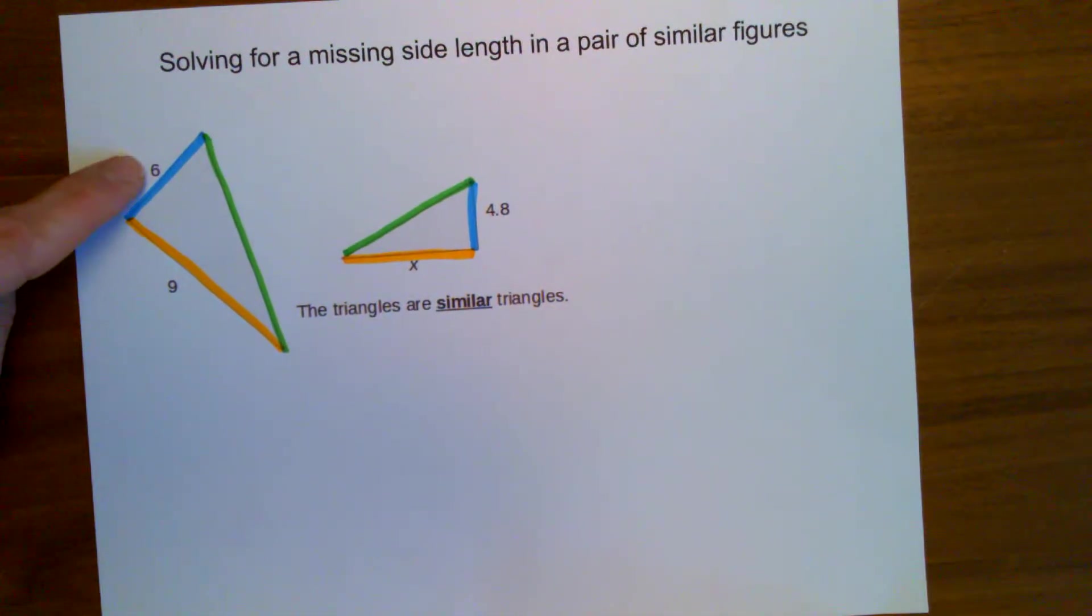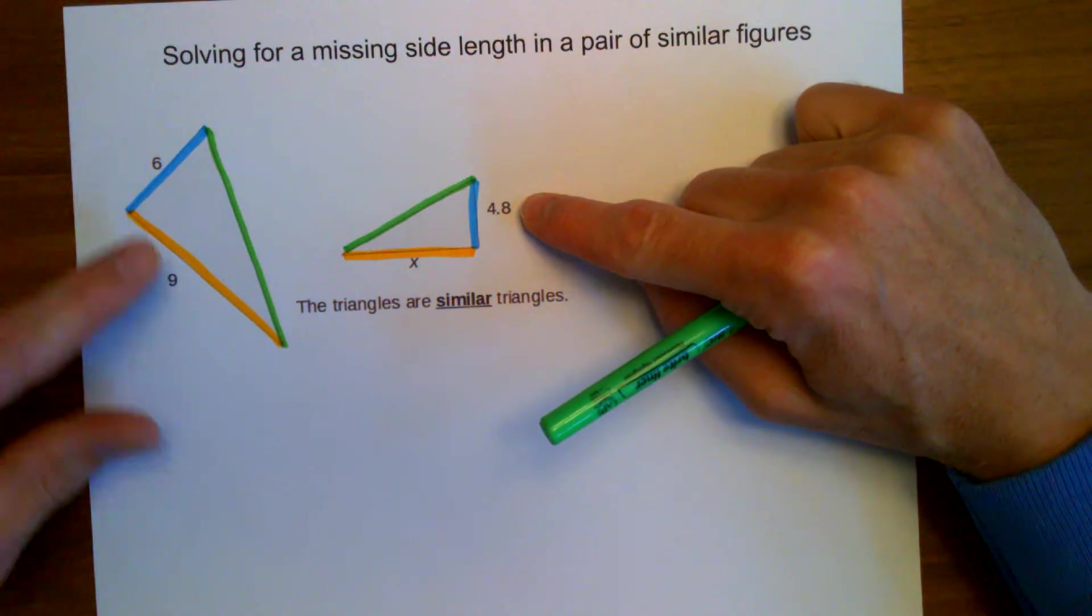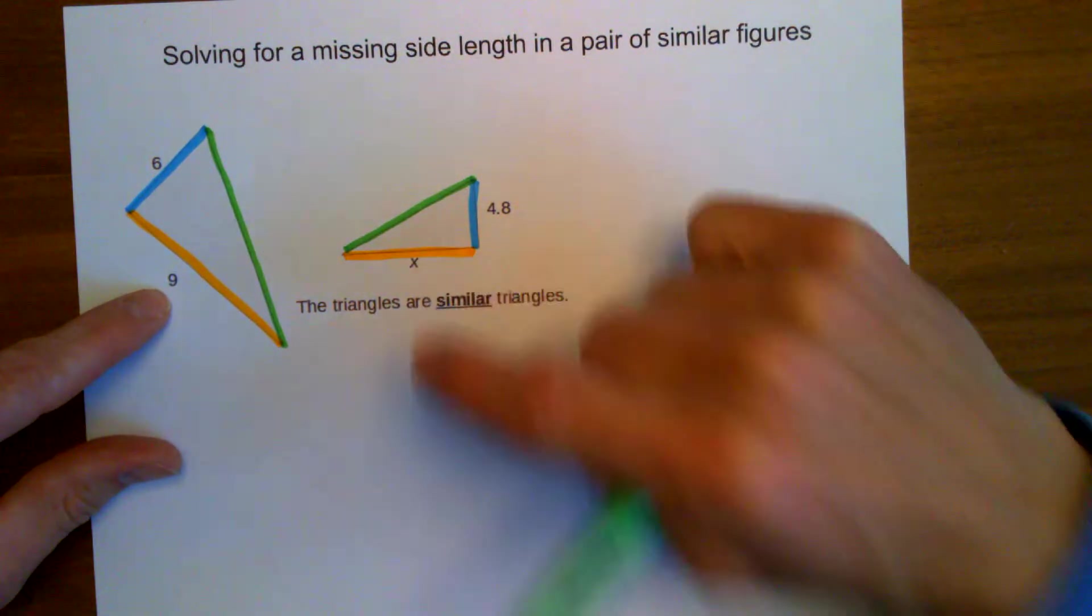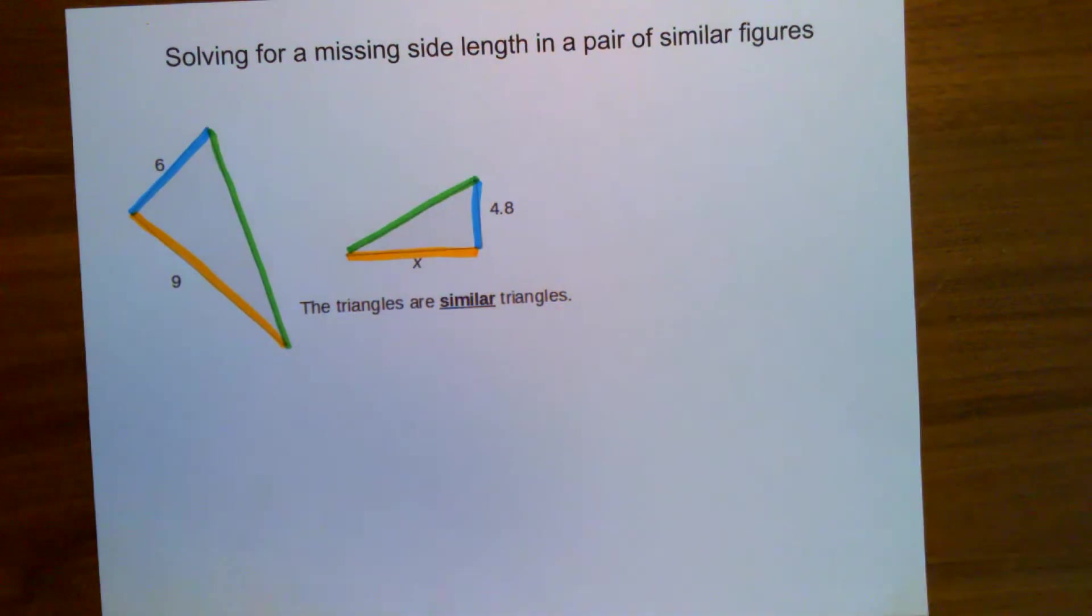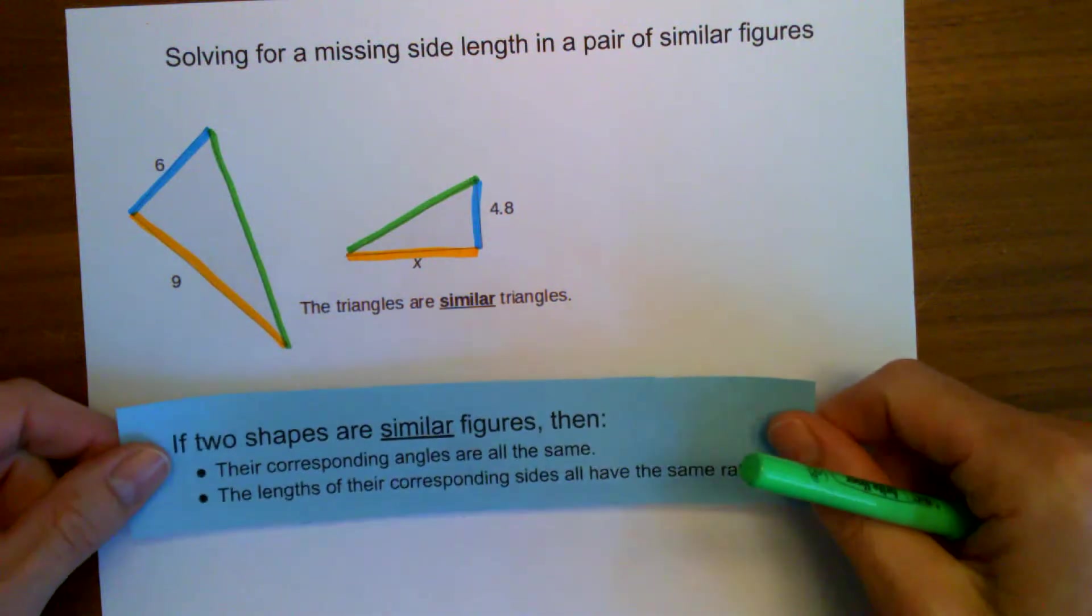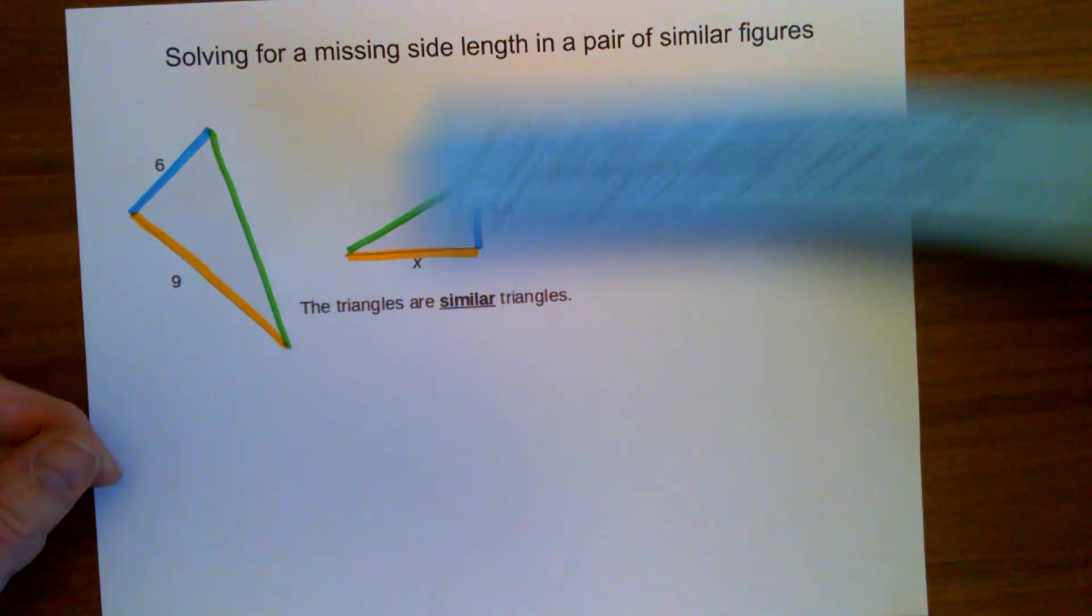Now, I know the 6 and the 4.8 go together, and the 9 and the unknown go together. Going back to this one, the ratio of the corresponding sides must be the same. They have the same ratio.